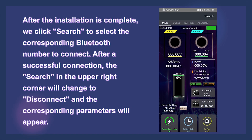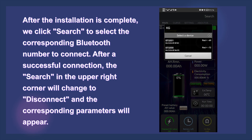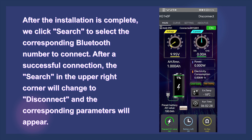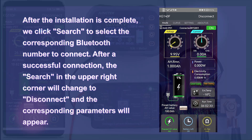After the installation is complete, we click search to select the corresponding Bluetooth number to connect. After a successful connection, the search in the upper right corner will change to disconnect and the corresponding parameters will appear.